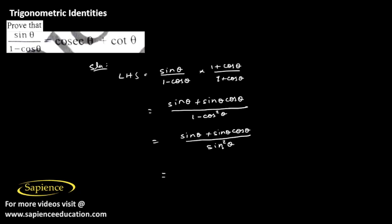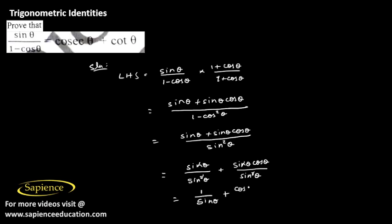Now if we consider each individual term in the numerator separately over the denominator, this gives sin theta divided by sin square theta, plus sin theta cos theta divided by sin square theta. Cancelling sin theta with sin square theta in each term, we get 1 by sin theta plus cos theta by sin theta. Now 1 by sin theta is cosecant theta and cos theta by sin theta is cot theta, which is our RHS. Hence proved.